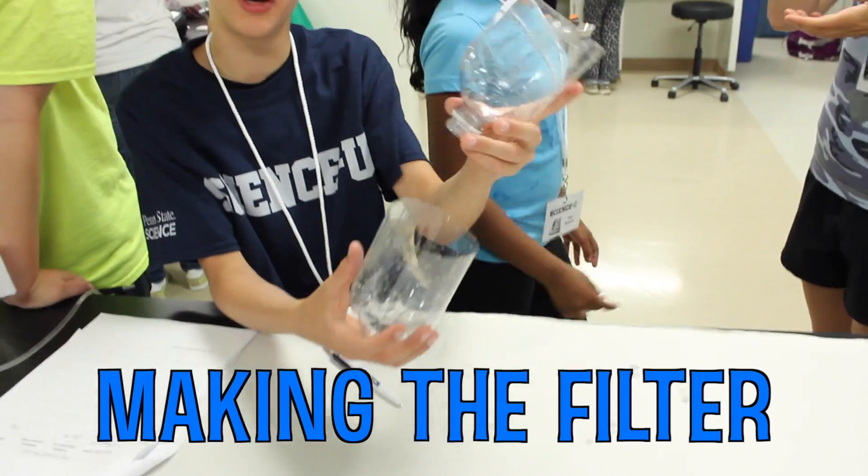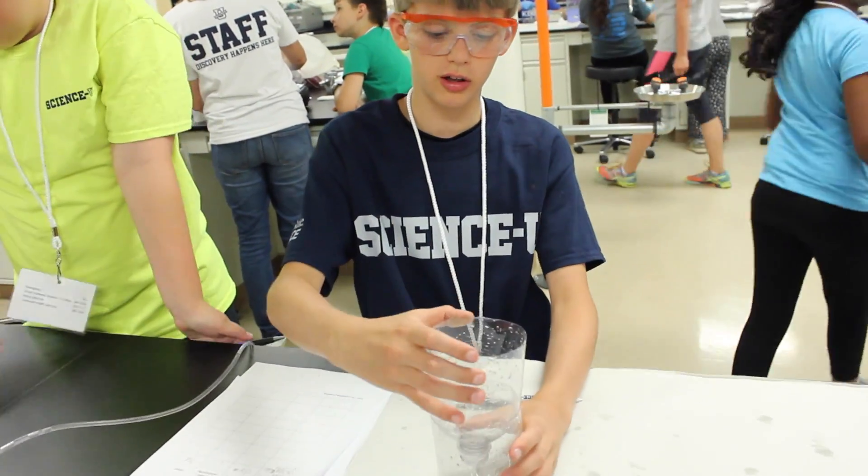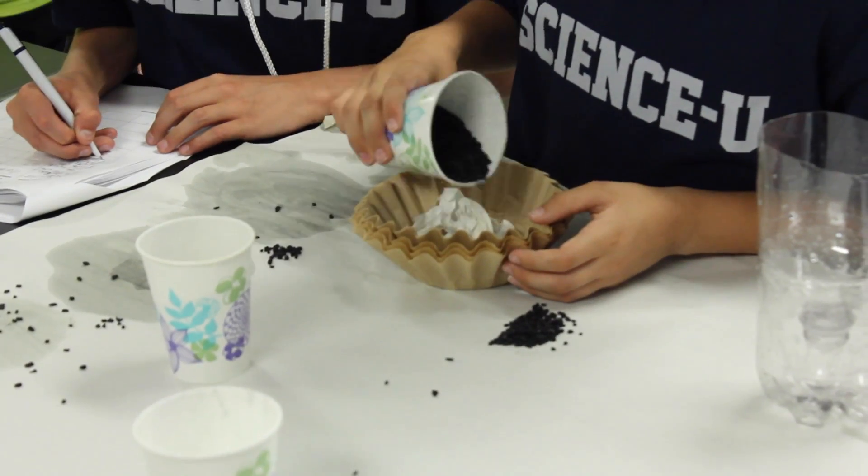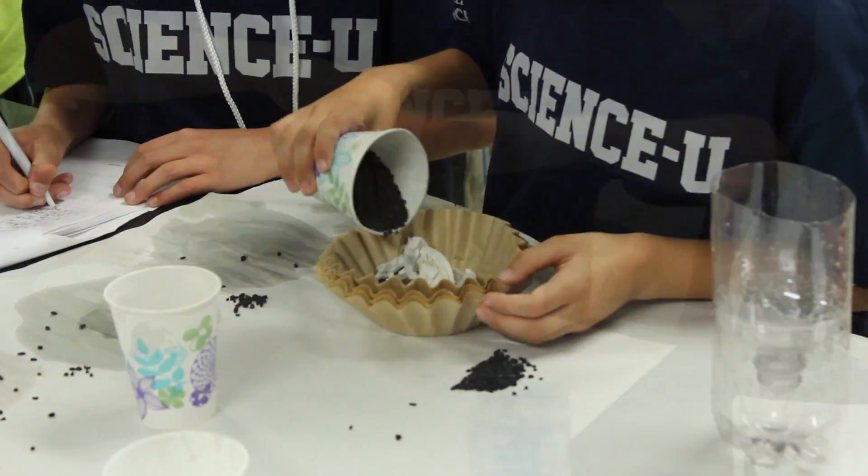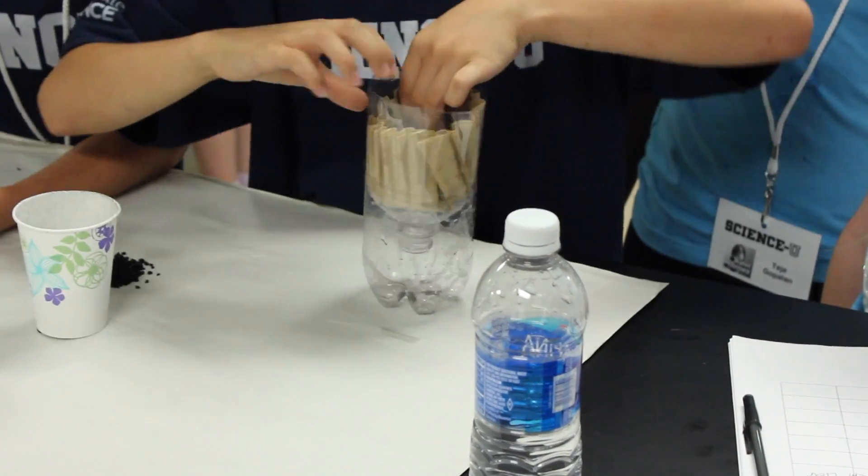We pretty much just cut the water bottle in half and put the top part in it like that. We put the coffee filters in and then put the paper towels and balls in there and then we put charcoal on top. We did okay last time, but we dumped out the water.